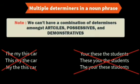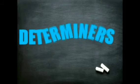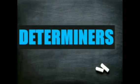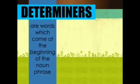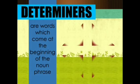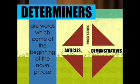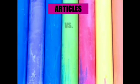Let's recollect the points we learned today. We learned determiners — words which come at the beginning of the noun phrase. We have articles, demonstratives, possessives, quantifiers. How can we use articles as determiners? Which are the articles we learned? A, an, and the.